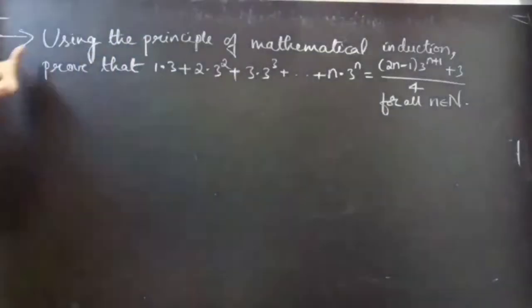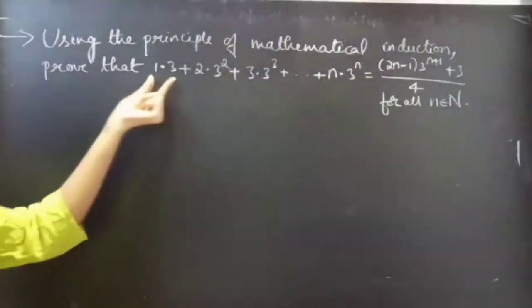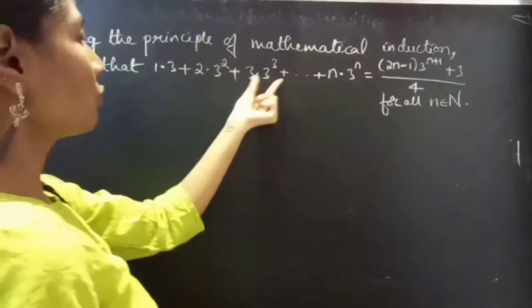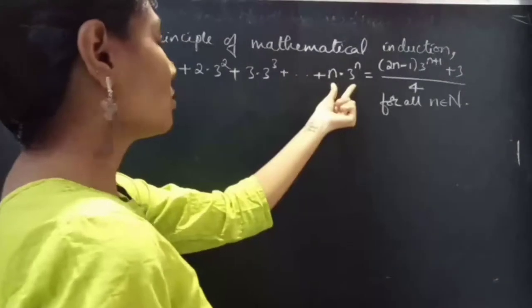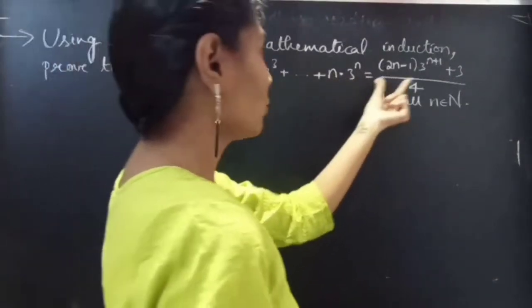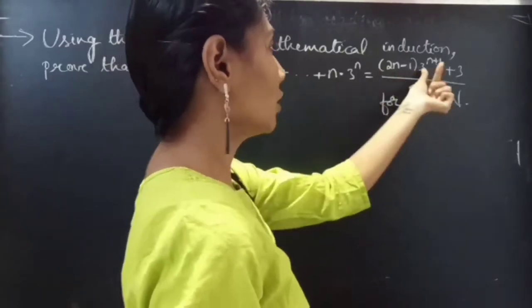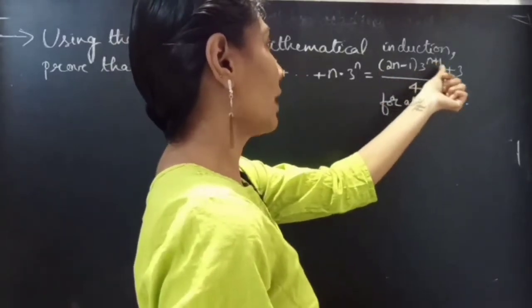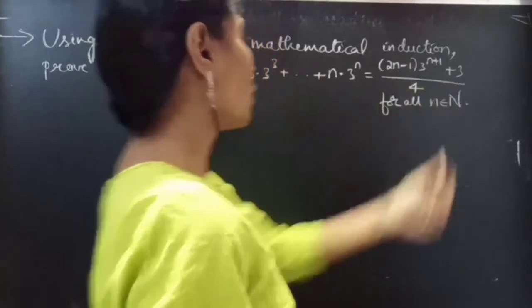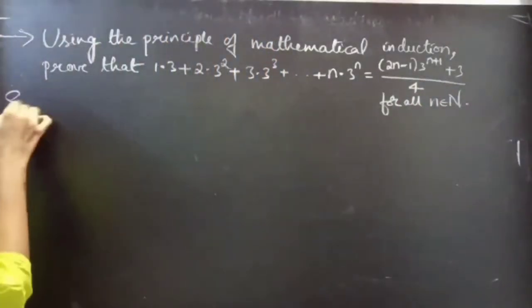Problem: Using the principle of mathematical induction, prove that 1×3 + 2×3² + 3×3³ + ... + n×3ⁿ equals (2n−1)×3^(n+1) + 3/4, for all n belonging to natural numbers. Solution.